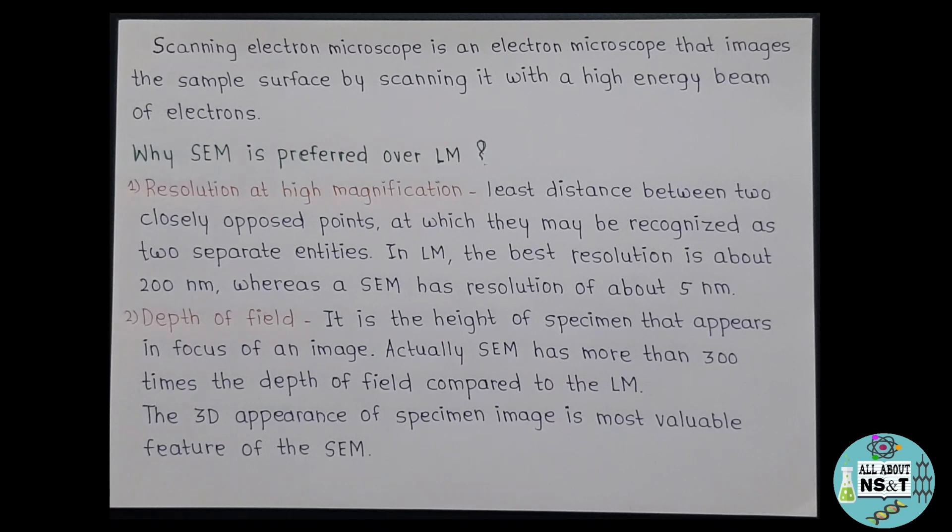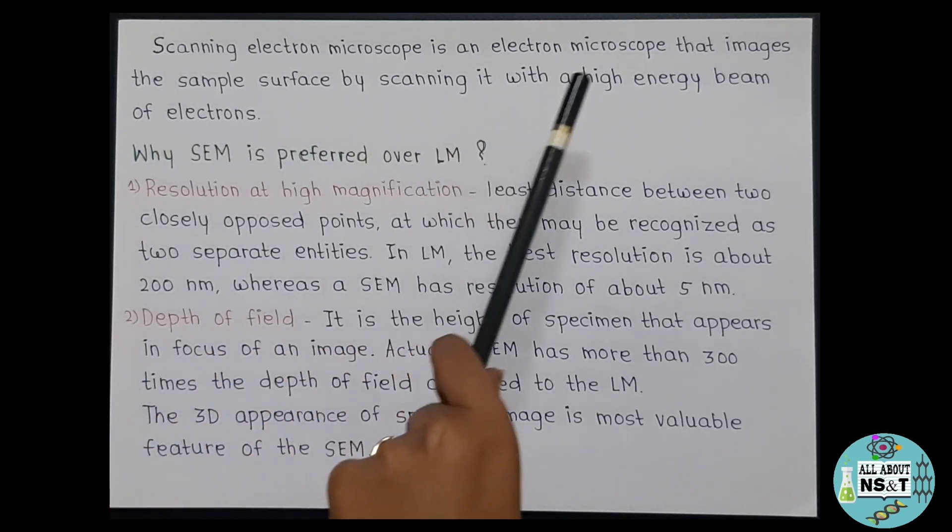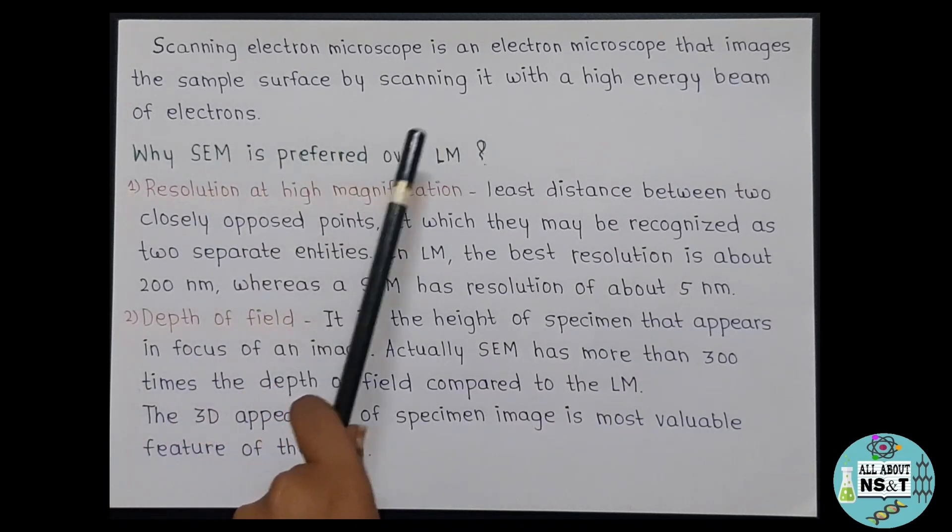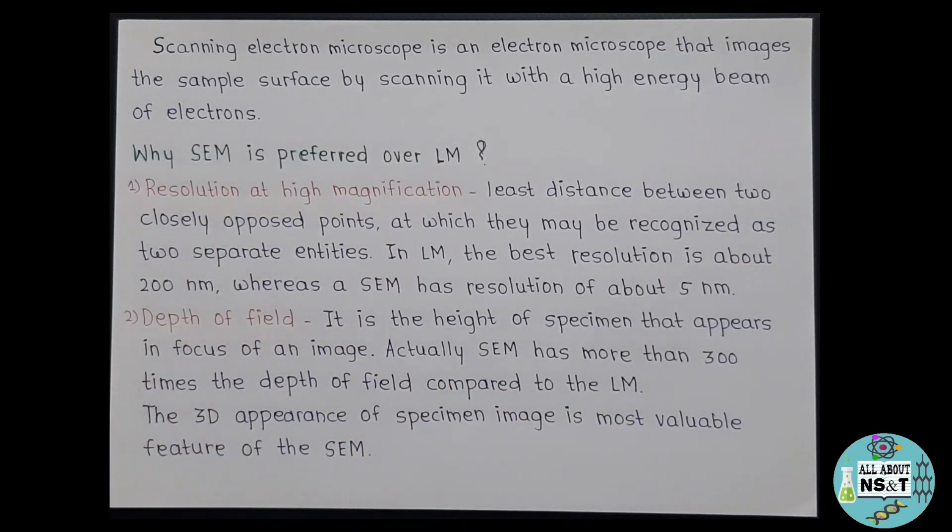Firstly, you need to know that the scanning electron microscope is an electron microscope that images the sample surface by scanning it with a high energy beam of electrons. So now you may ask what's the difference between the light microscope and this electron microscope. Then let me tell you that the conventional light microscopes use a series of glass lenses to bend light waves and create a magnified image, while the scanning electron microscope creates the magnified images by using electrons instead of light waves. And you must also know the reasons why SEM is considered better and preferred over light microscope for characterizing nanomaterials. So these reasons include resolution at high magnification, depth of field, and microanalysis.